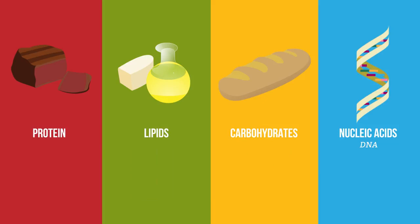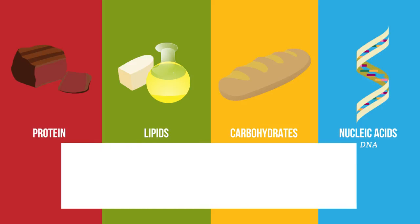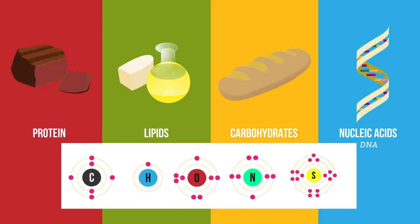Proteins are a little more complex, with four or five elements: carbon, hydrogen, oxygen, nitrogen and sometimes sulfur.